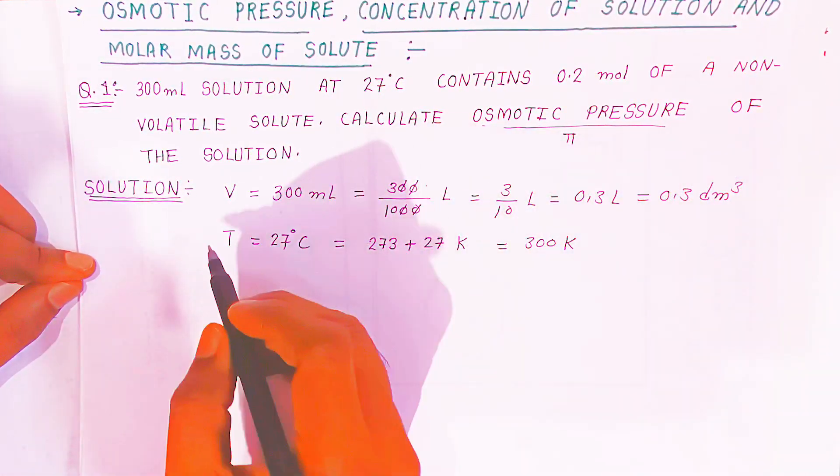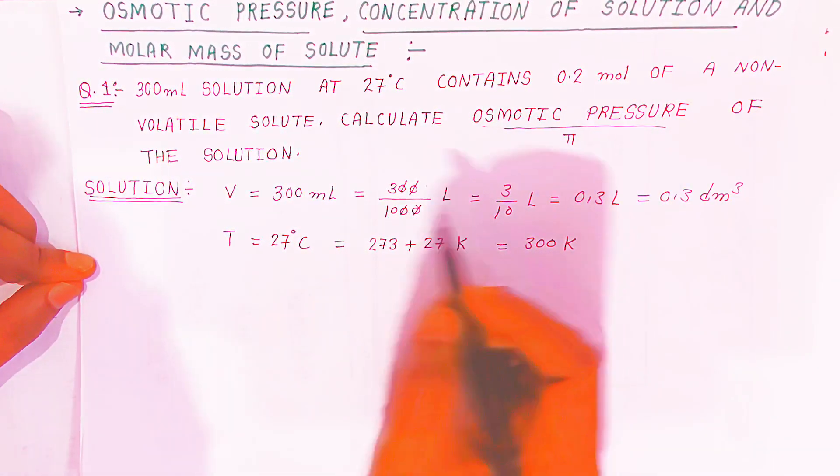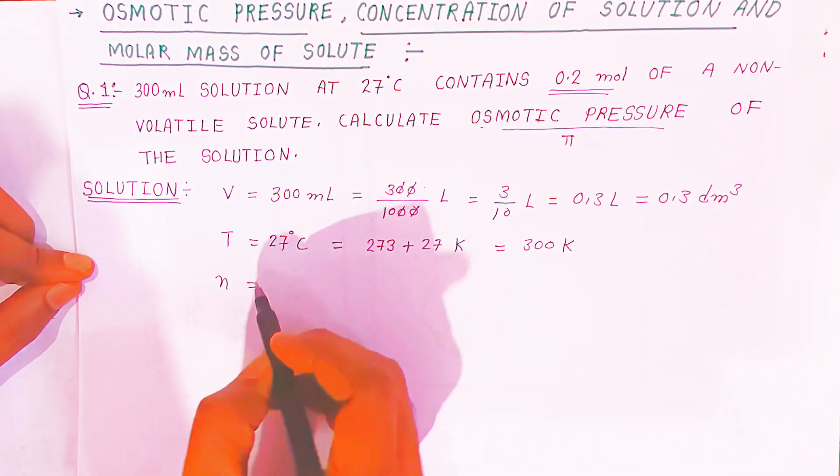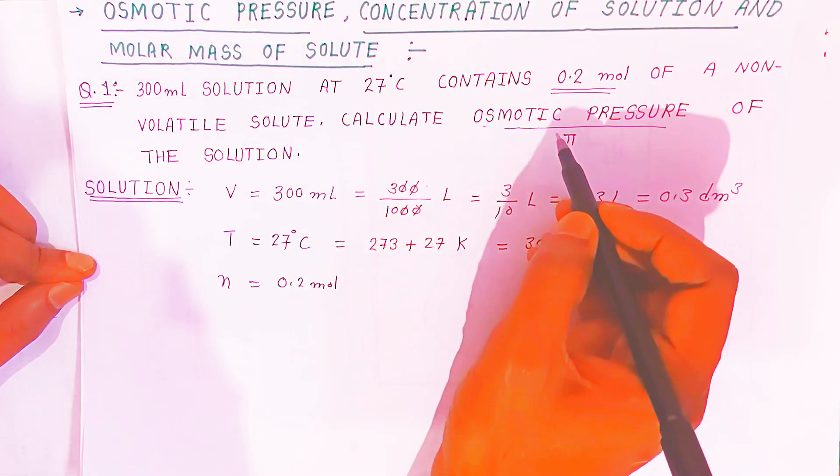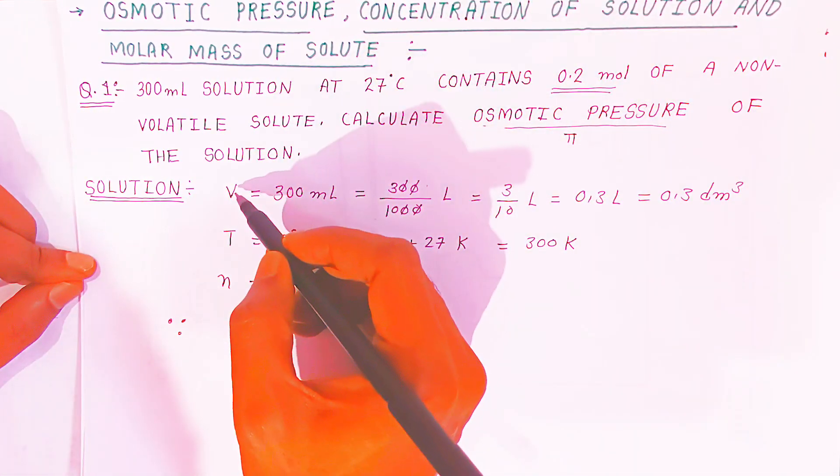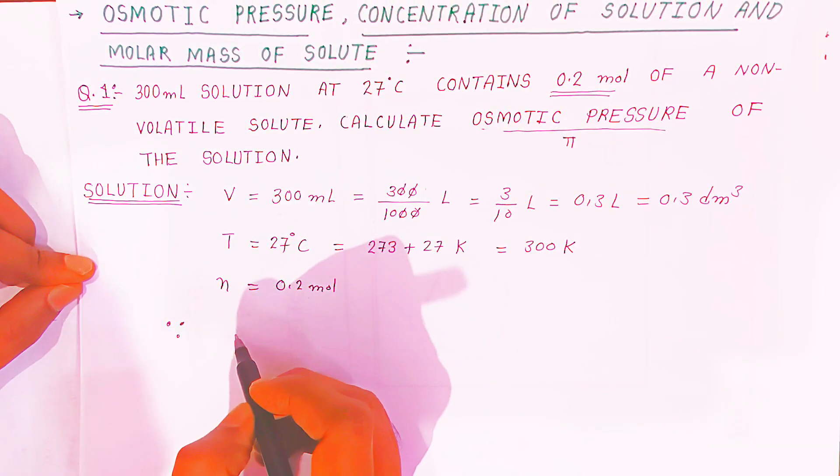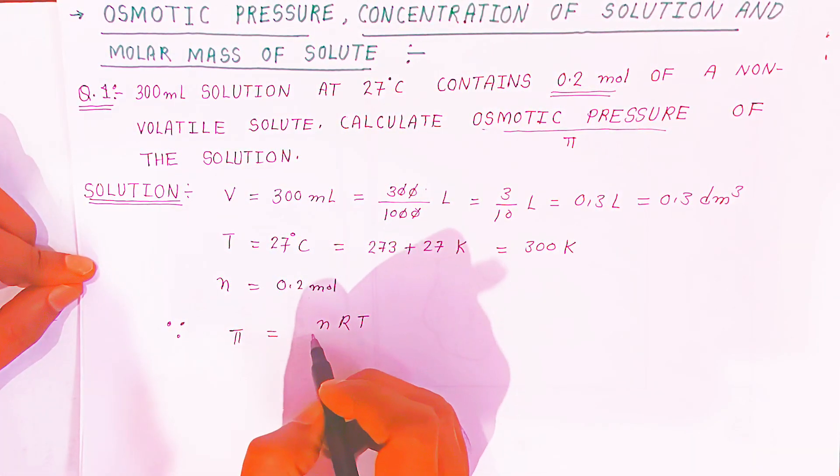Now you have to use the formula for osmotic pressure. What else is given here? Number of moles is given, that is small n is also given 0.2 mol. Now you know the formula. You have to remember the formula of osmotic pressure when these three variables are given. What is the relation with π? You know π = nRT/V.